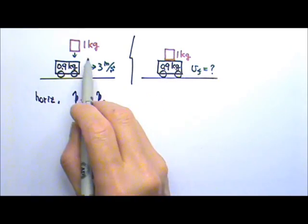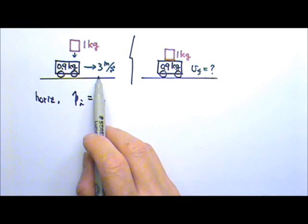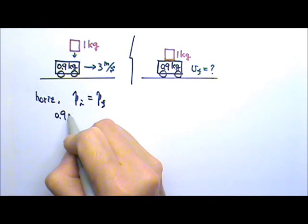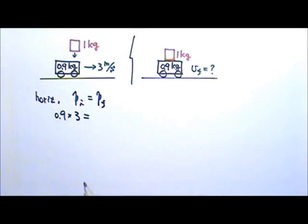Initially, the cart is the only one with a horizontal momentum. So the initial momentum is the M times V of the cart.